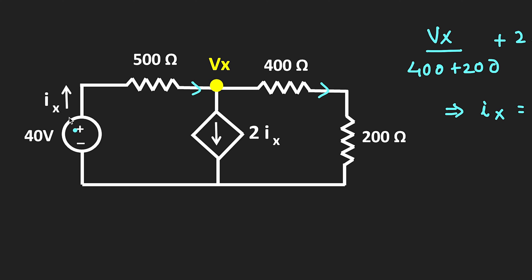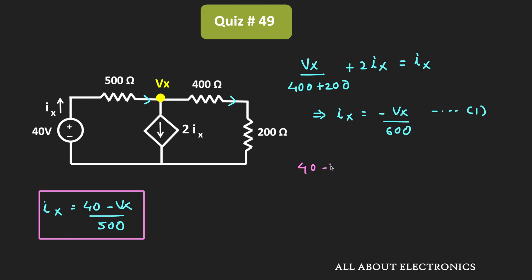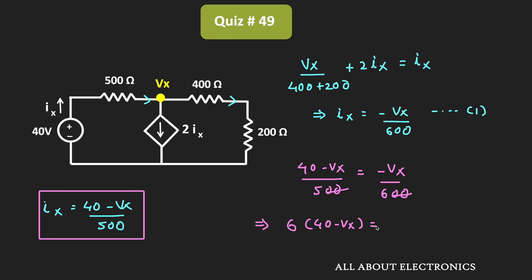Now, this current Ix is also equal to (40 minus Vx) divided by 500 Ohm. If we put this value of Ix into Equation 1, then we can write: 6 times (40 minus Vx) equals minus Vx divided by 600 Ohm. The two zeros cancel on both sides, giving us 6 times (40 minus Vx) equals minus 5 times Vx. Simplifying, the value of Vx comes out as 240 volts.